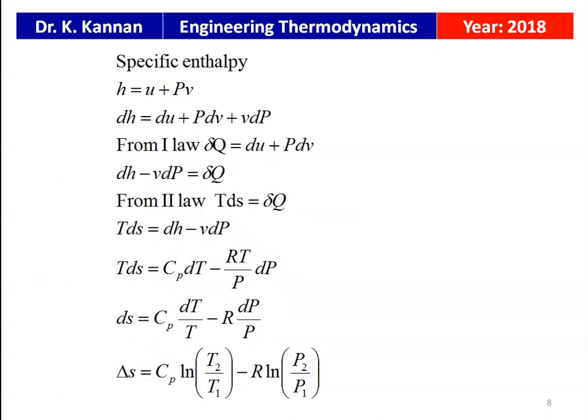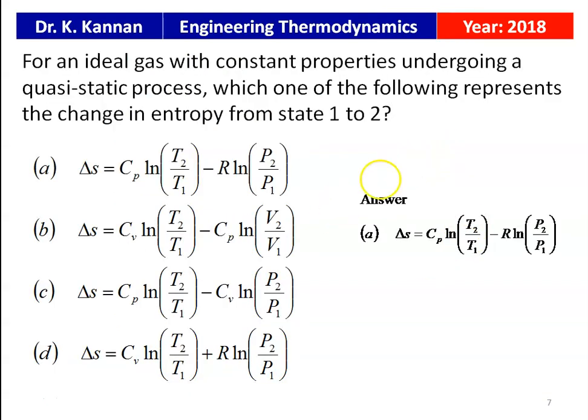The specific enthalpy of an ideal gas: H = U + PV. Differentiating: dH = dU + PdV + VdP. From the first law, δQ = dU + PdV, so δQ = dH − VdP. From the second law, TdS = δQ, giving TdS = dH − VdP. Since dH = Cp·dT and V = RT/P, we get TdS = Cp·dT − (RT/P)·dP. Dividing by T: dS = Cp·dT/T − R·dP/P. Integrating: ΔS = Cp·ln(T2/T1) − R·ln(P2/P1), which is option A.